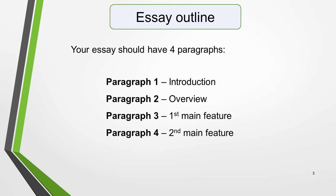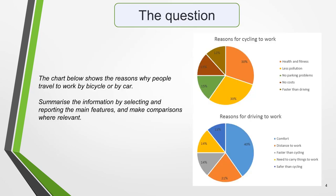We now have everything we need to begin planning and writing our essay. Now, here's our practice question. The chart below shows the reasons why people travel to work by bicycle or by car. Summarise the information by selecting and reporting the main features. And make comparisons where relevant. Write at least 150 words.